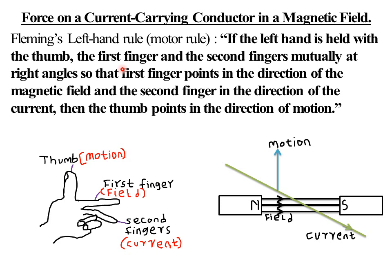To summarize: an electric motor converts electrical energy into kinetic energy — use Fleming's left-hand rule. An electrical generator converts kinetic energy or mechanical energy into electrical energy — use Fleming's right-hand rule. Do not confuse the two.